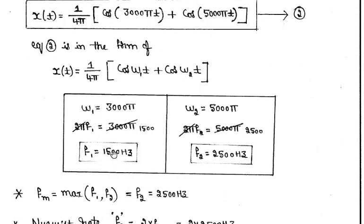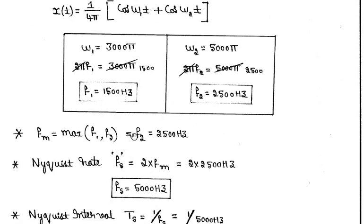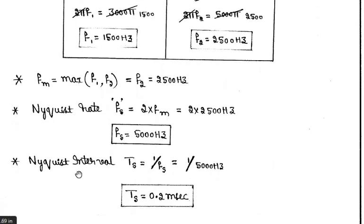From these angular frequencies we get f₁ = 3000π/(2π) = 1500 Hz and f₂ = 5000π/(2π) = 2500 Hz. To find the Nyquist rate, we need the highest message signal frequency. Between f₁ and f₂, the highest is f₂ = 2500 Hz, so fm = 2500 Hz. Therefore, the Nyquist rate Fs = 2 × 2500 = 5000 Hz. The Nyquist interval Ts = 1/5000 = 0.2 milliseconds.